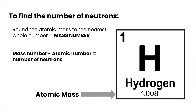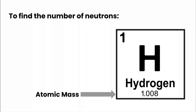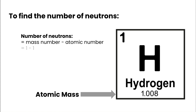Finally, to find the number of neutrons, we take the atomic mass for hydrogen — 1.008 — and round it to the nearest whole number. That gives us something called the mass number. The mass number is the atomic mass rounded to the nearest whole number. To find neutrons: mass number minus atomic number equals number of neutrons. In hydrogen, mass number is one, atomic number is one, so hydrogen has zero neutrons.